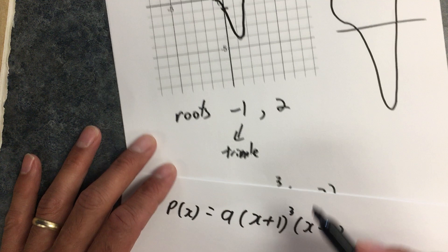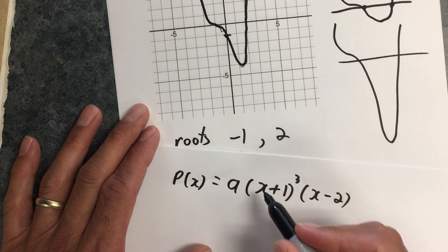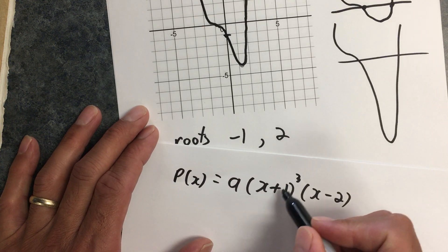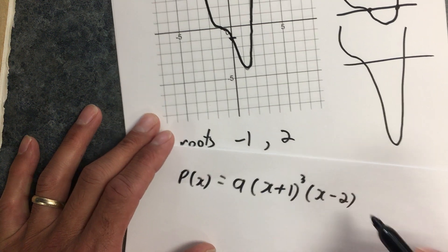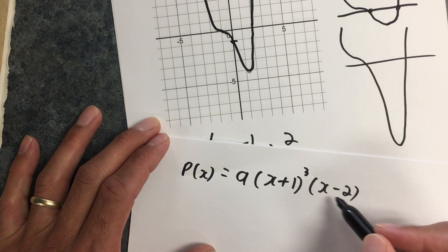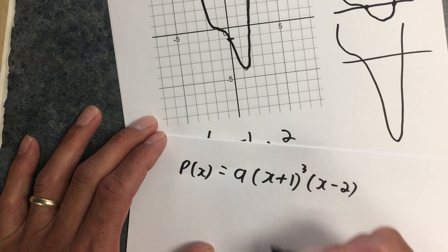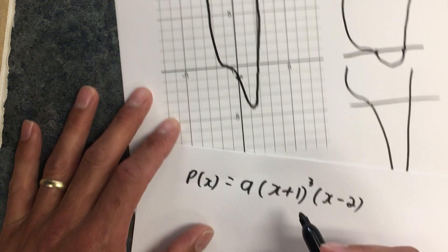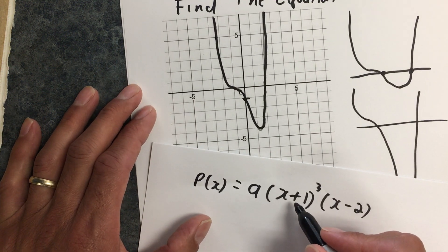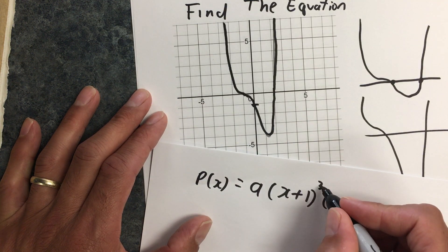I know this because I have a root at minus 1—that is, if x was equal to minus 1, this would become a 0. And I have a root at positive 2. If x was positive 2, this would become a 0. I also know that my root at negative 1 is a triple root.